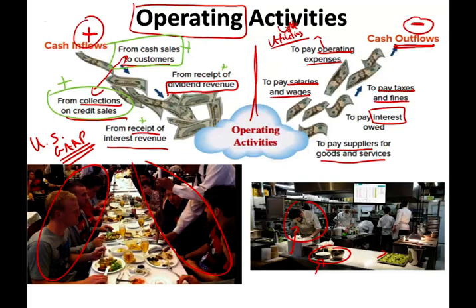We net those two out. So if cash inflow is $10,000 and cash outflow is $4,000, the net operating activities result is $6,000. We'll learn exactly how to prepare this section later on.